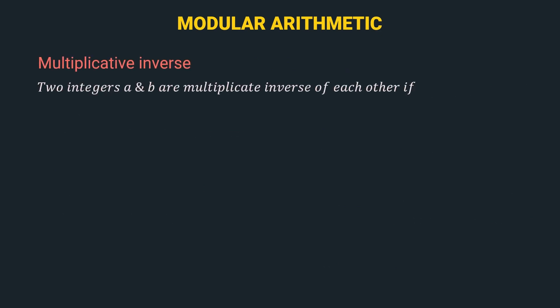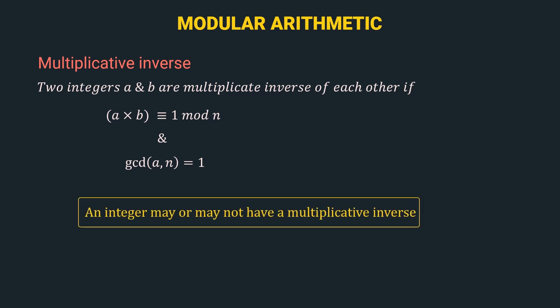And finally, let's understand the multiplicative inverse. So, two integers a and b are multiplicative inverse of each other if a into b is congruent to 1 mod n, and gcd of a and n is 1. So, here there are two conditions that must be satisfied. Also note that an integer may or may not have a multiplicative inverse. The condition of existence of multiplicative inverse is that gcd(a, n) must equal 1. If this condition is not satisfied, then multiplicative inverse for a does not exist with respect to mod n; if it is satisfied, then it does exist. There is no straightforward formula like in additive inverse. To calculate the multiplicative inverse of a number, there is an algorithm called the extended Euclidean algorithm which is used to find it. This we will cover in the next video along with some examples.